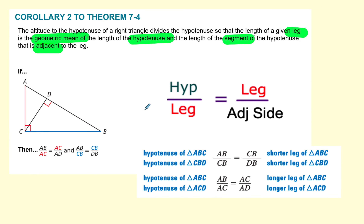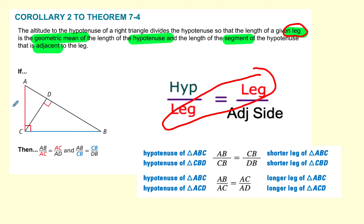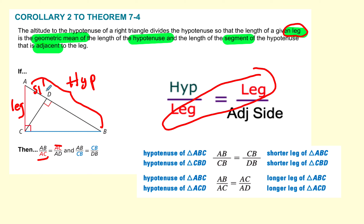This leads us to a theorem that tells us about this relationship. We're talking about the leg being the geometric mean. We have AC, and AC is the geometric mean between the whole hypotenuse AB and the side of the hypotenuse adjacent to the leg. That's what the theorem tells us, and this happens because we know the triangles are similar, so therefore their sides are in proportion.